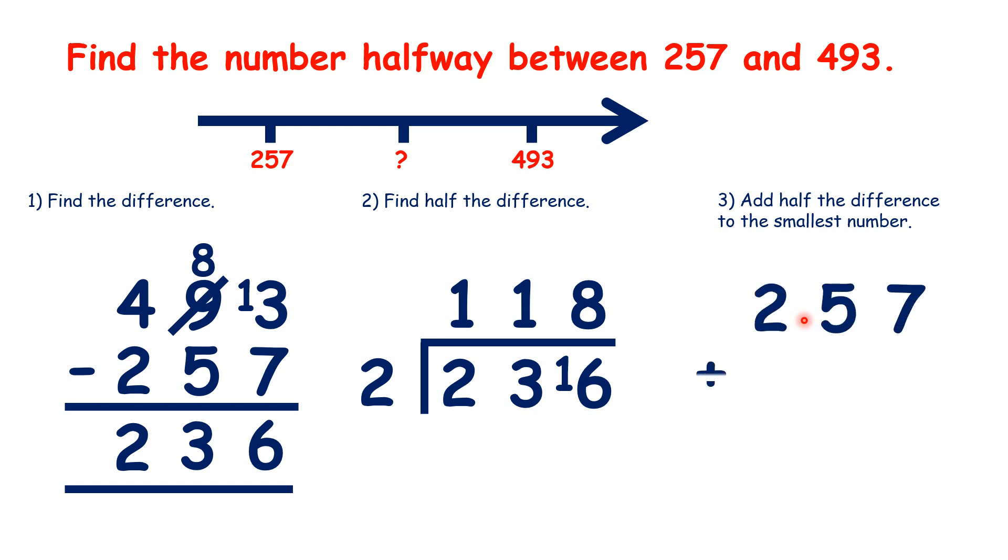Then we find the number halfway between two numbers by adding half the difference to the smaller number. So 375 is halfway between 257 and 493.